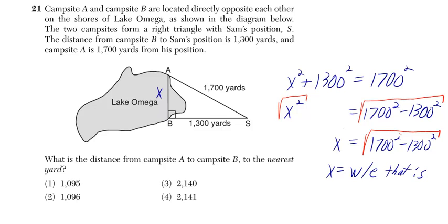So we got a lot of mumbo-jumbo there. All you really need to do though is pay attention to this diagram. I've labeled ABX, so you can write X squared plus 1,300 squared is equal to 1,700 squared.